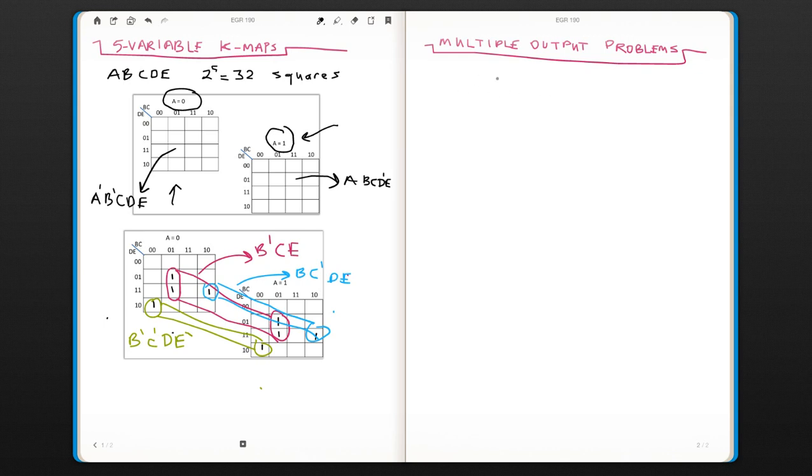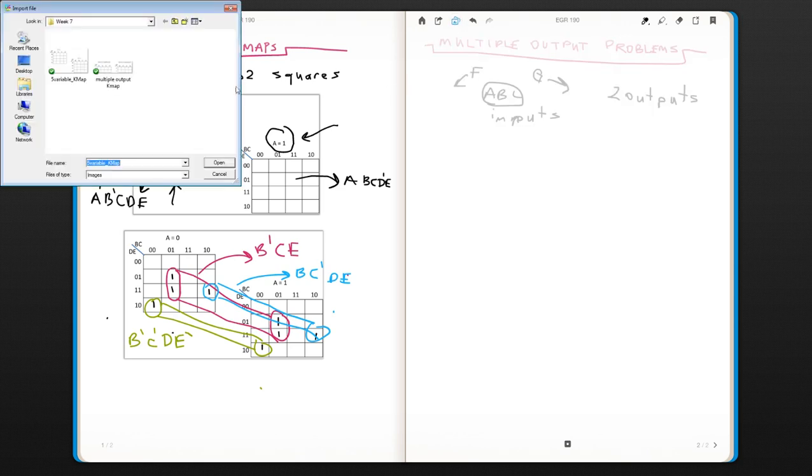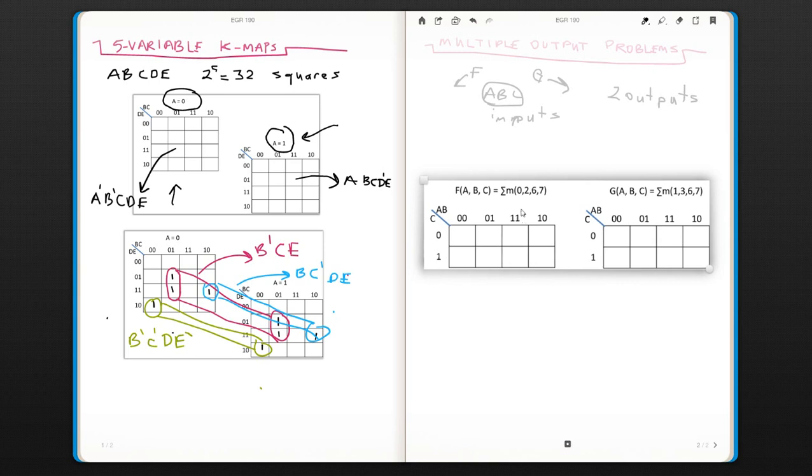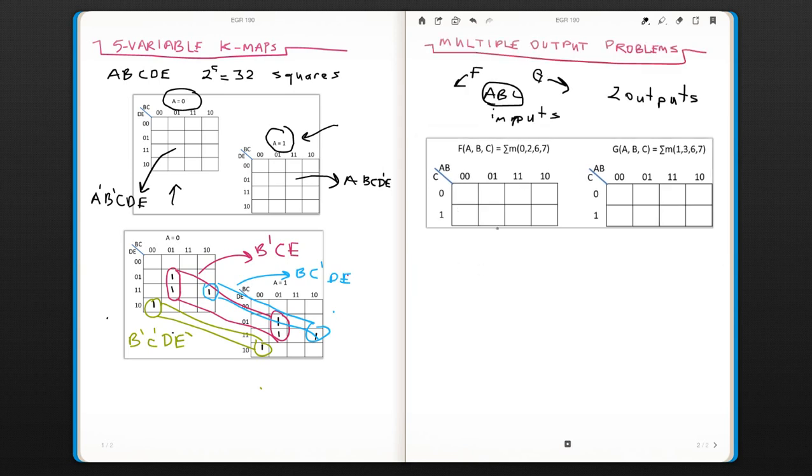But how about you have two outputs with same inputs? So you have A, B, C as your inputs, but you have two outputs. Then you will have two K-maps. Here is an example. Let's say we have these two K-maps, F and G. And we'll see how we will actually implement this.